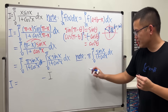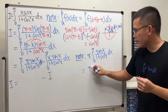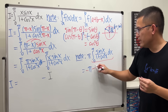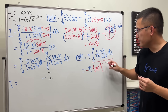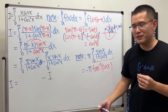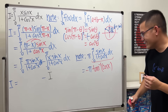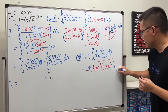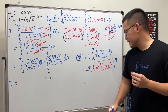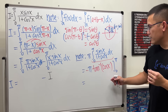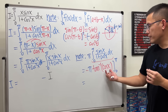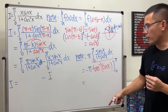Recall that this integral gives us −arctan(cos x). You can rewind the video to see how we got that. Now I plug in the bounds: first plug in π — cos(π) = −1, so arctan(−1) = −π/4. The negative in front makes this −(−π/4) = π/4.